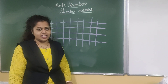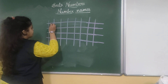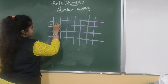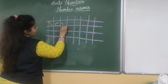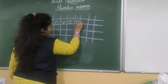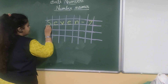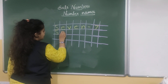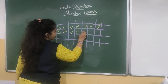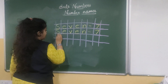So after 6, the next is 7. So let's get started. How to write the number name? Write capital letter S-E-V-E-N. S-E-V-E-N.